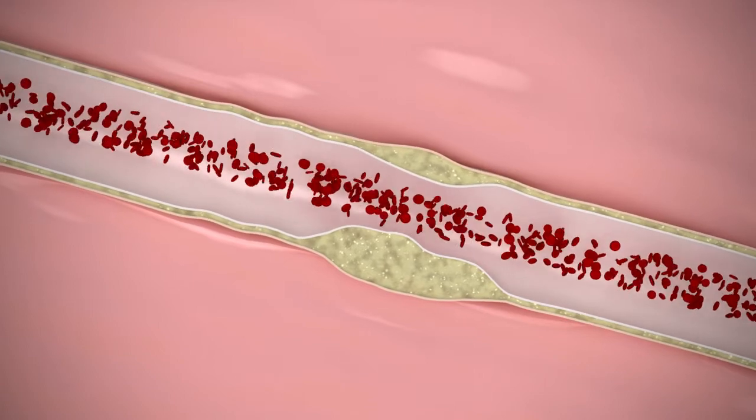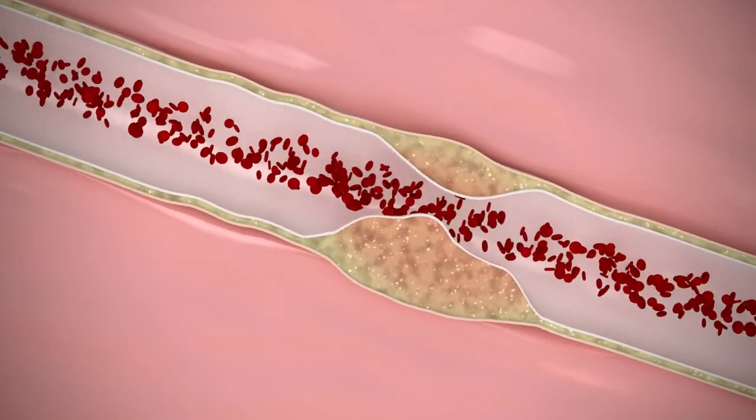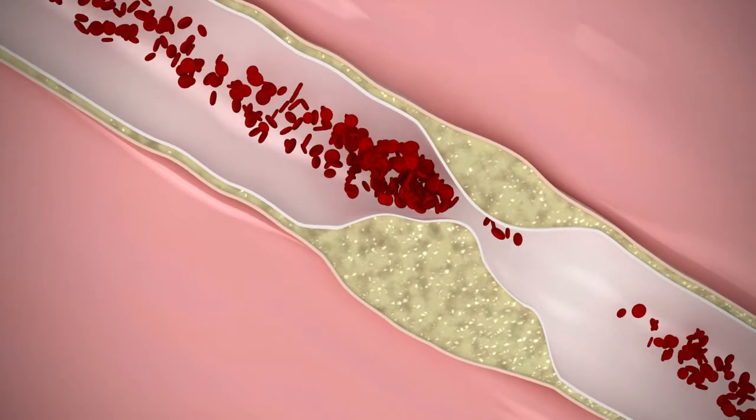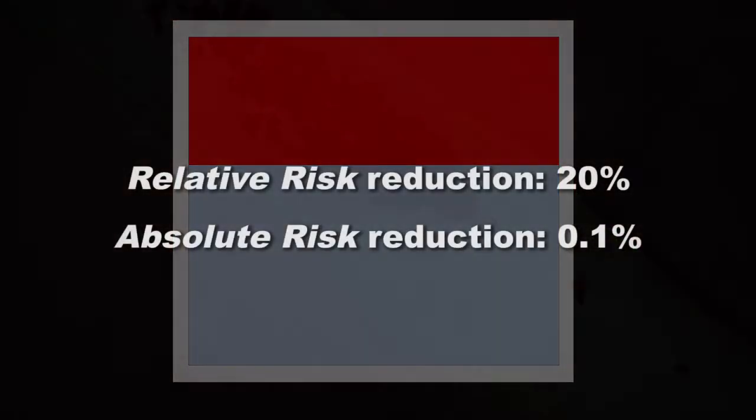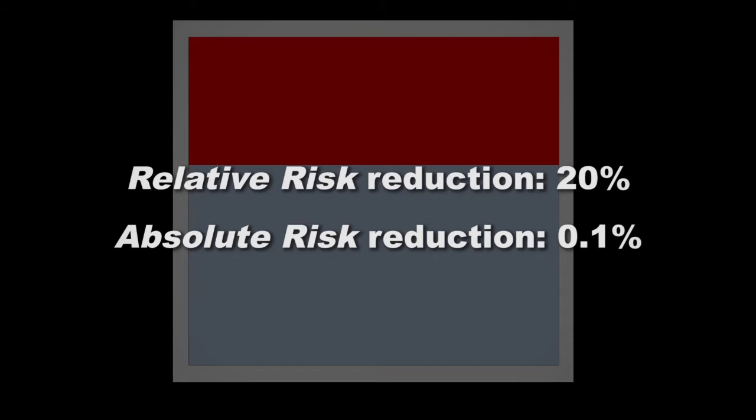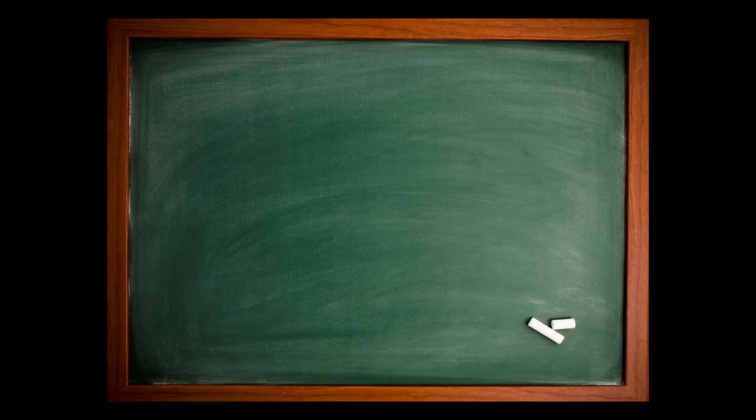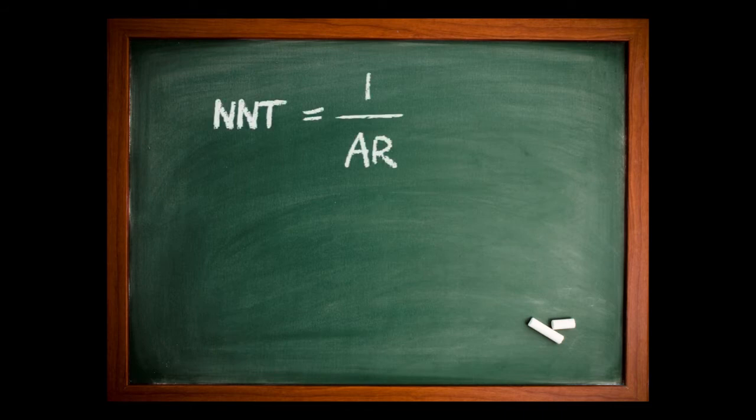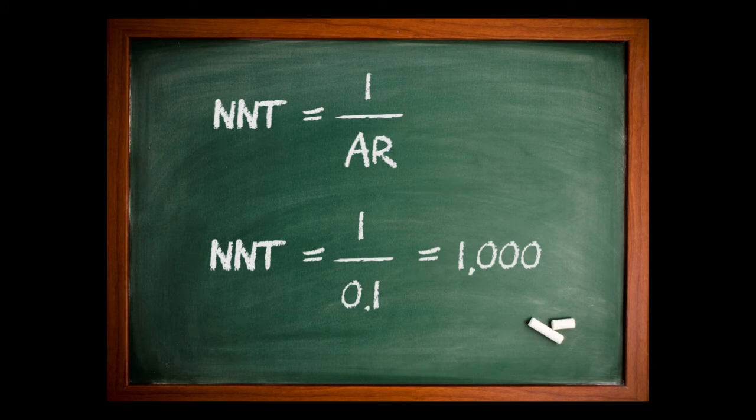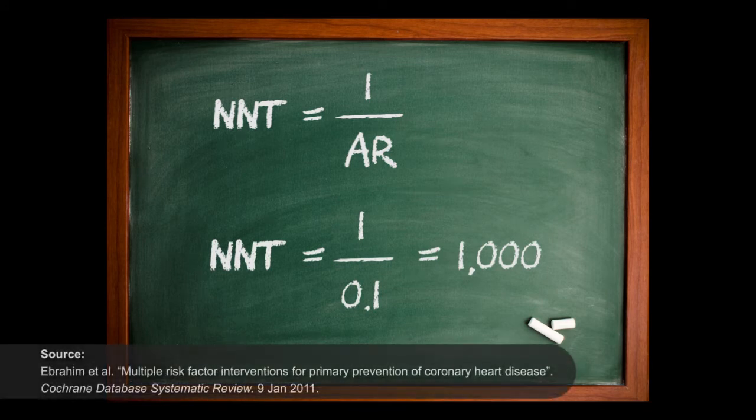For example, let's say statins, a medication used to prevent heart attacks, were given to 10,000 people. Let's say the number of deaths from heart attacks in the statin group goes down from 50 to 40, a relative risk reduction of 20%, and an absolute risk reduction of 10 out of 10,000, or 0.1%. To get the number needed to treat, we take 1 divided by the absolute risk, and we get 1,000. So in this example, we'd have to treat a thousand patients with statins in order to save one life due to heart attacks, which is about what a 2011 Cochrane review found to be the case.